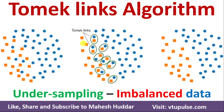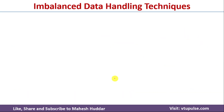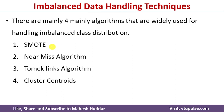In this video I will discuss TomekLinks algorithm for handling imbalanced data. This is one of the undersampling techniques for handling imbalanced data in machine learning. I have already discussed what balanced and imbalanced datasets are, the problems we face with imbalanced datasets, and a few techniques to handle them. The links for those videos are given in the description below.